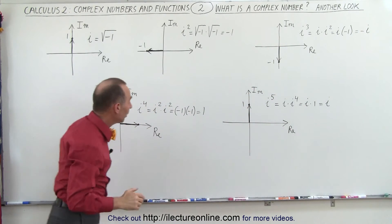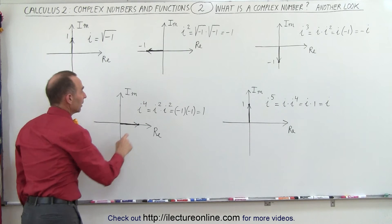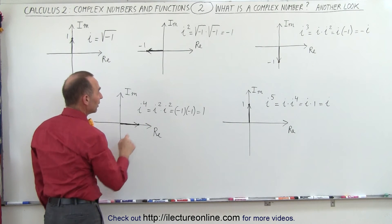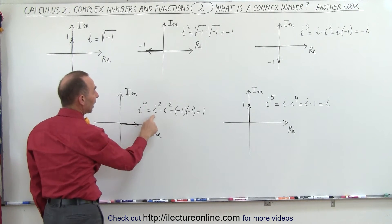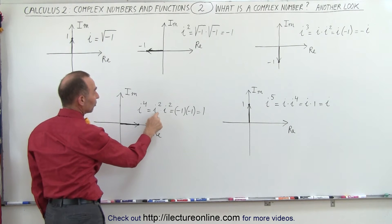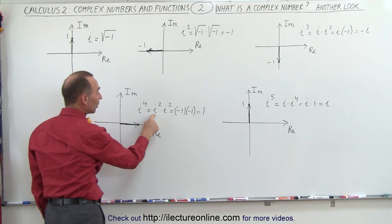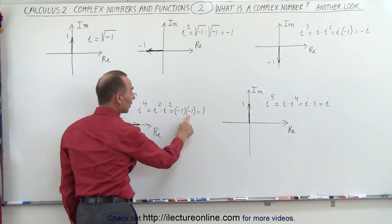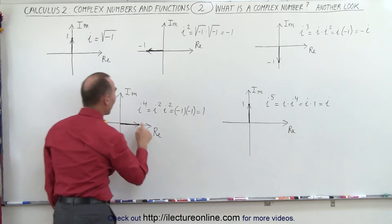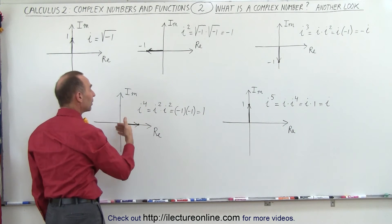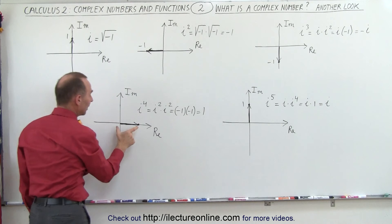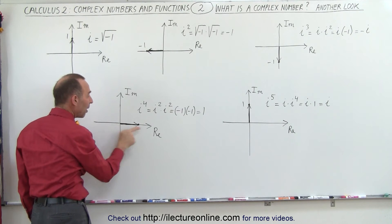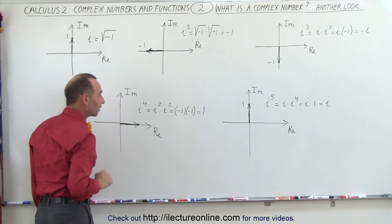If we now multiply i times i times i times i, or i to the fourth power, that is equal to i squared times i squared. And since each i squared is equal to negative one, negative one times negative one gives us positive one. So i to the fourth power gives us a real number again, and we have a small unit vector pointing in the positive real axis direction.